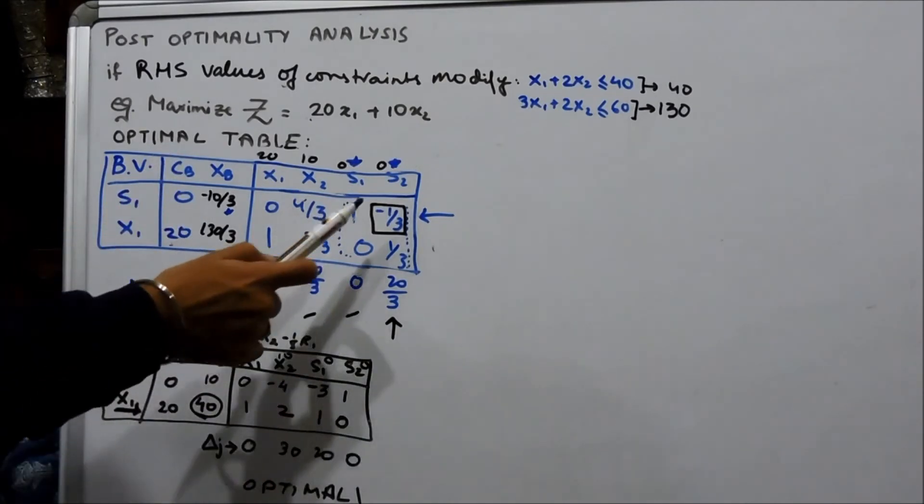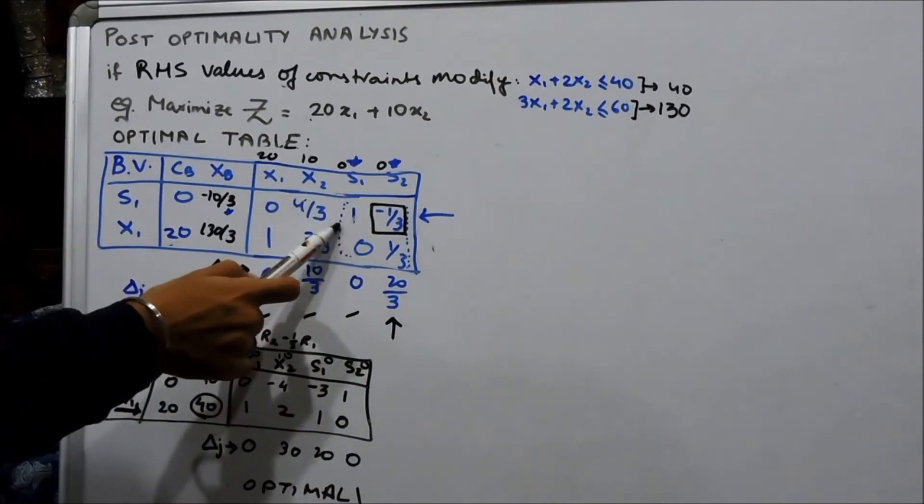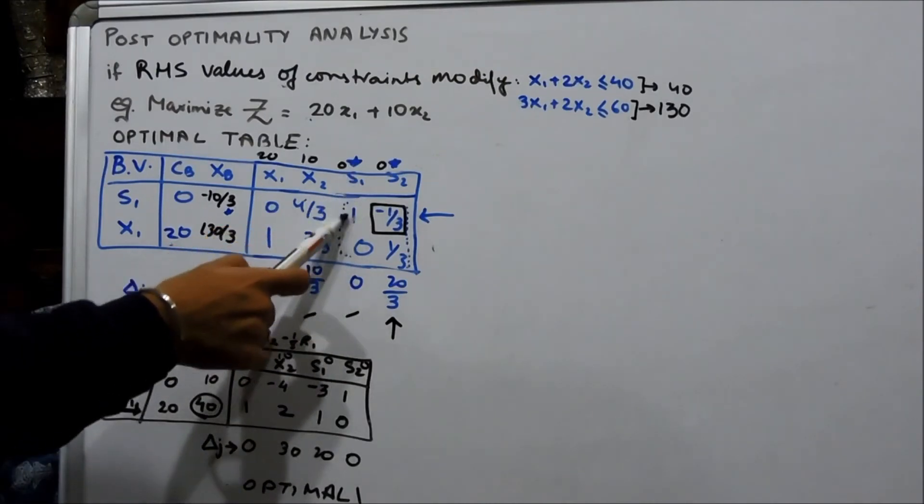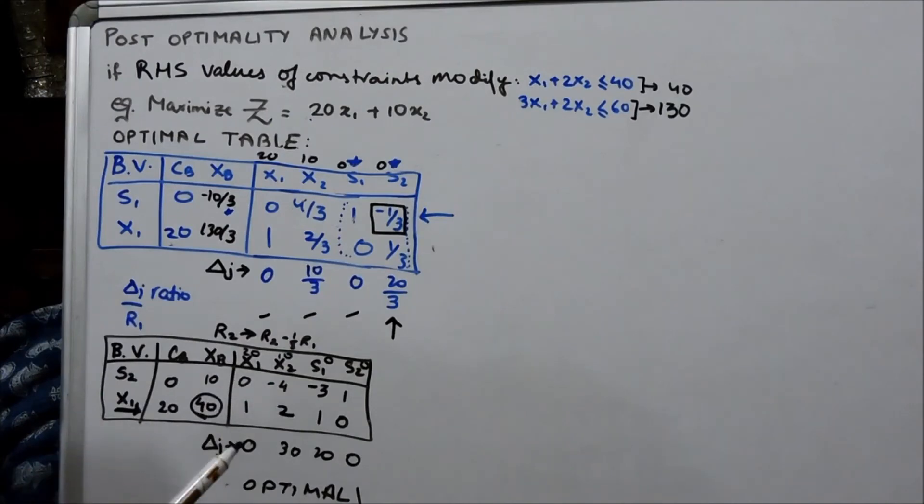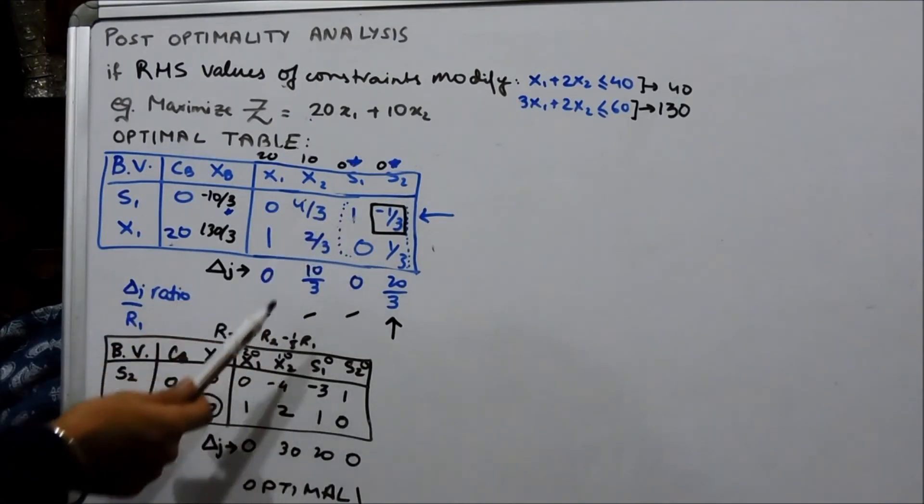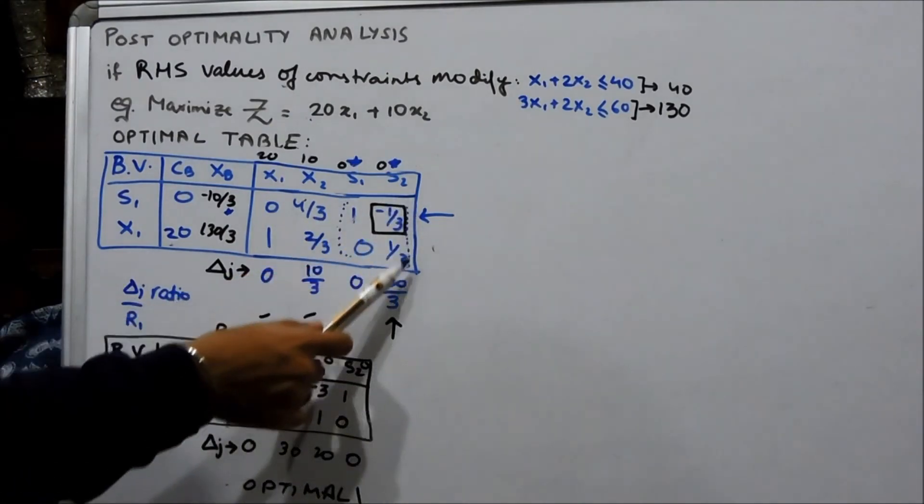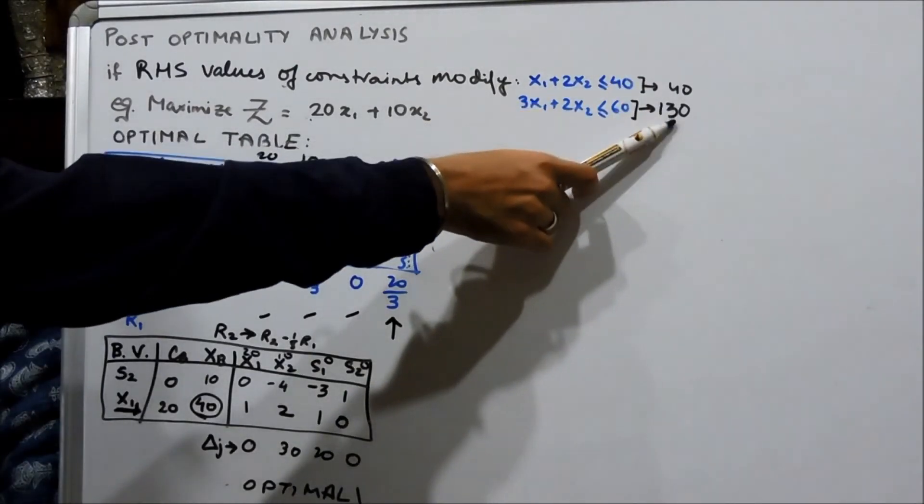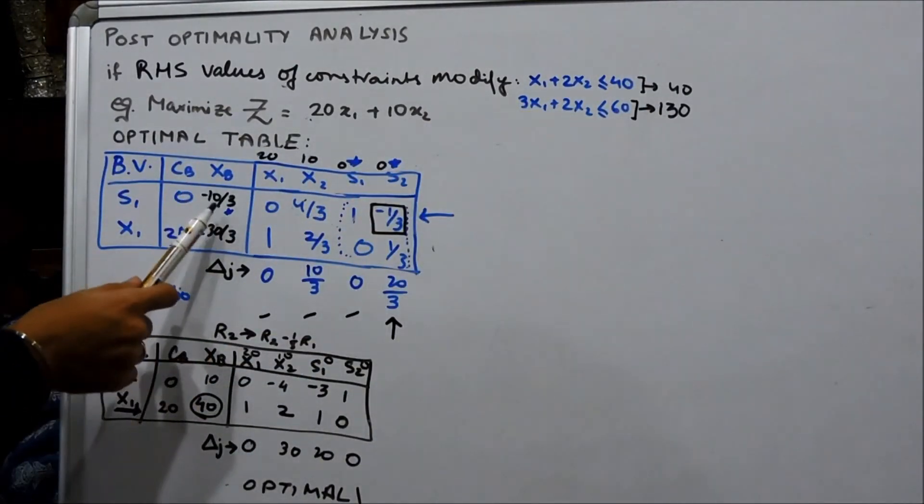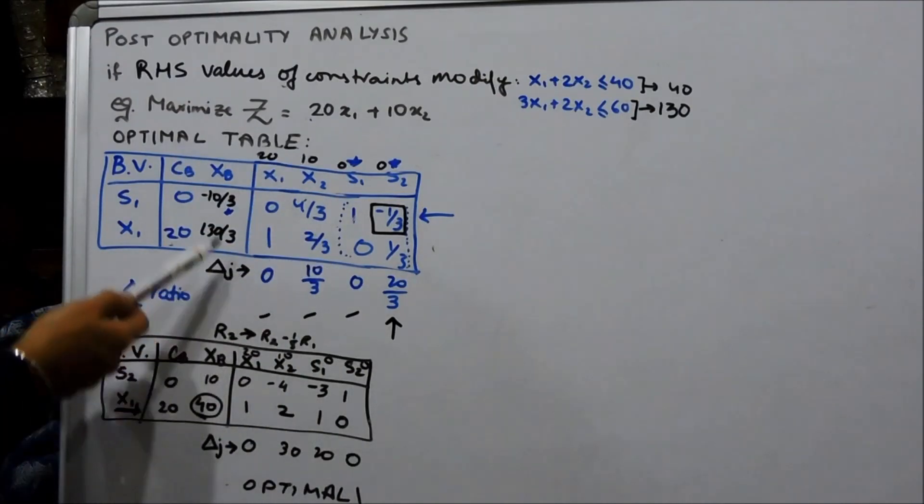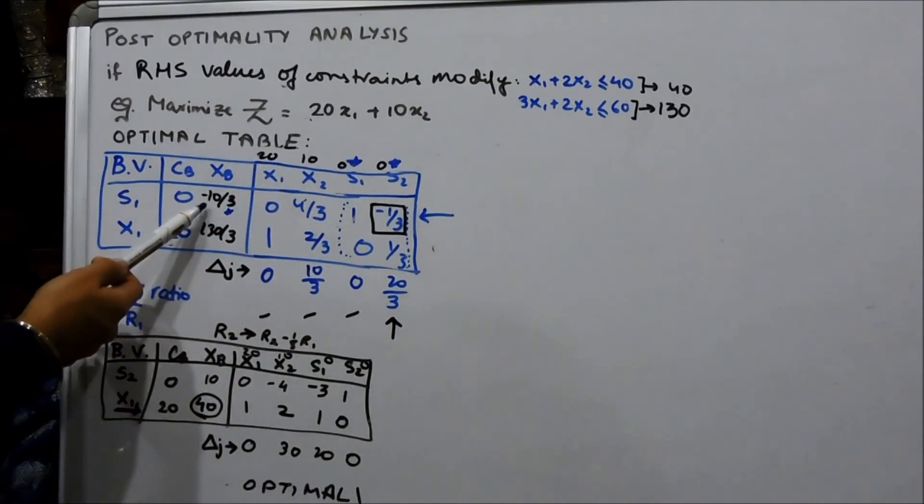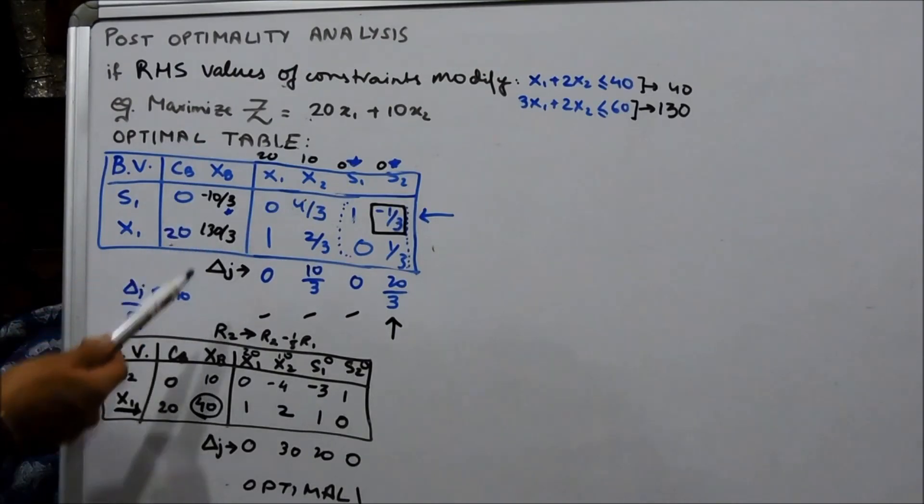We calculate the optimal table. We make a look at the optimal inverse which is nothing but the columns of the slack variables. And multiply that optimal inverse into the changed column vector and substitute it in the new XBs. Then, continue optimality or feasibility, whatever the situation arises according to the question. Thank you.